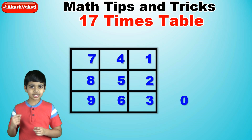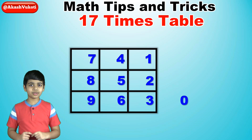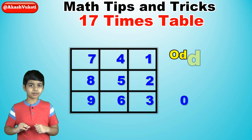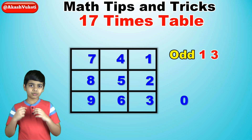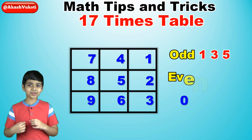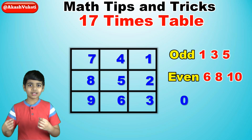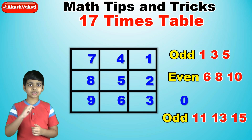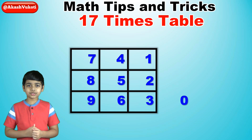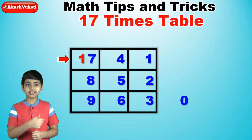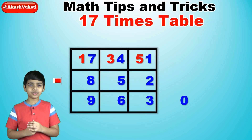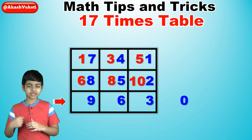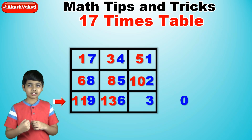Next, for the 10's digits, we'll just follow a simple pattern. We write three odd numbers in the first row, then we write three even numbers in the second row, and then we write three odd numbers in the third row. So, starting with the odd numbers, that's 1, 3, 5. Even numbers: 6, 8, 10. Odd numbers: 11, 13, 15.